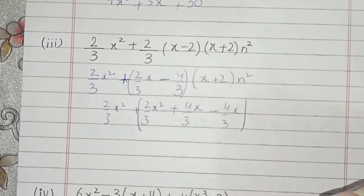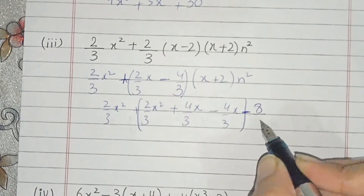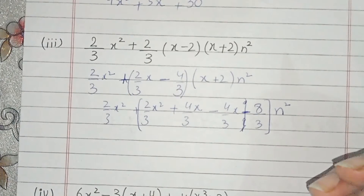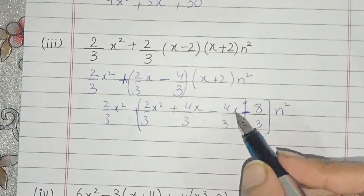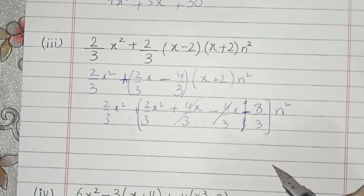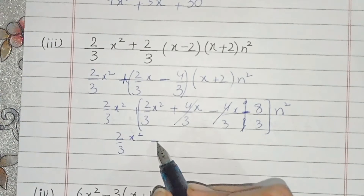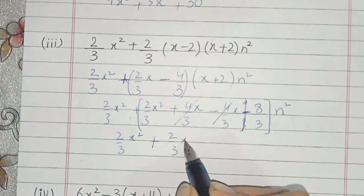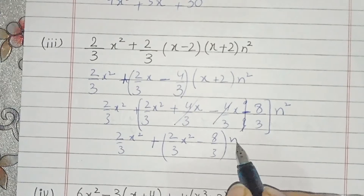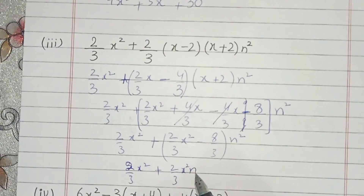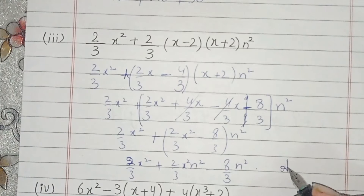This gives minus 8/3 and this is n squared. These same values we can subtract — we subtract. We have 2/3 x squared, plus 2/3 x squared·n, minus 8/3·n². So combining: 2/3 x squared plus 2/3 x squared·n² minus 8/3 n squared. This is the answer to questions 2 and 3 both.